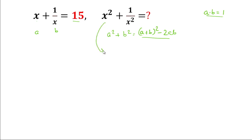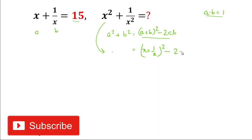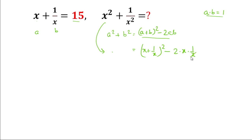So we can write a square plus b square as x plus 1 by x, all squared, minus 2 times x multiplied by 1 by x. Here x and x cancel, and we know the value of x plus 1 by x is 15. So it becomes 15 square minus 2, and the value of 15 square is 225, minus 2, that is 223.